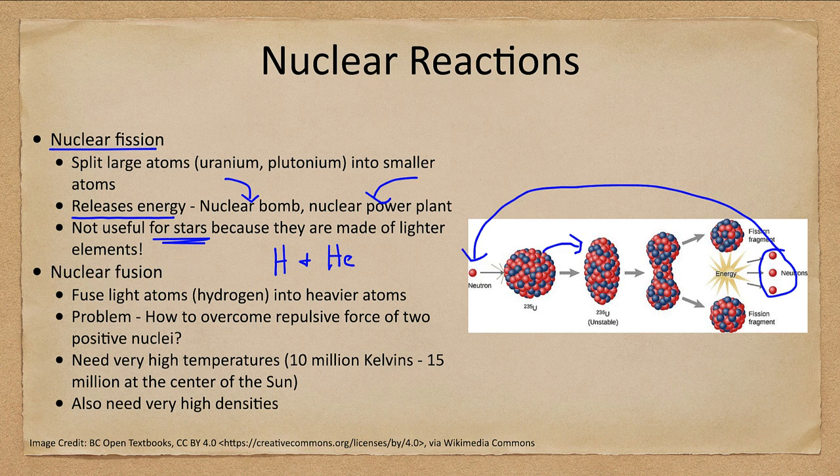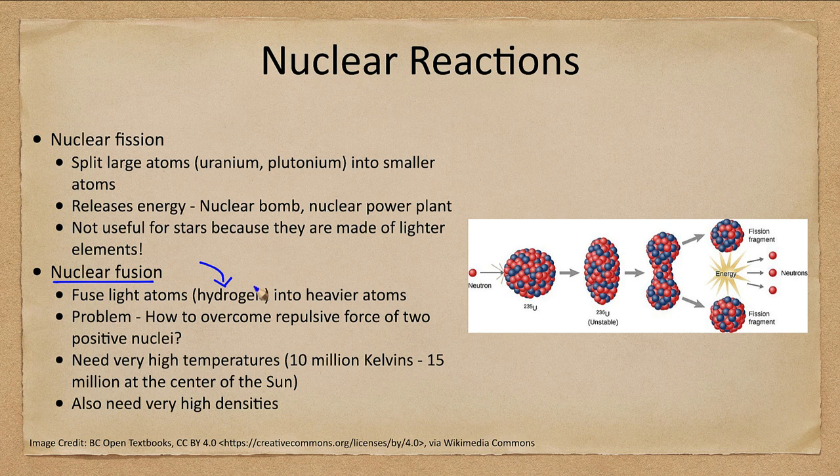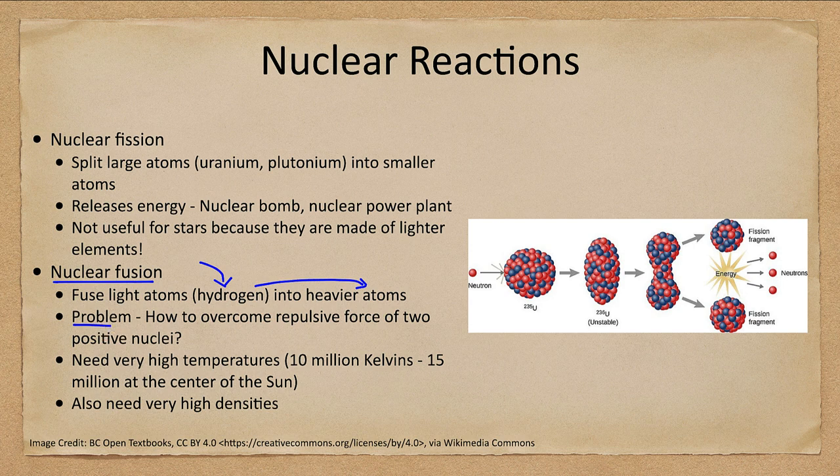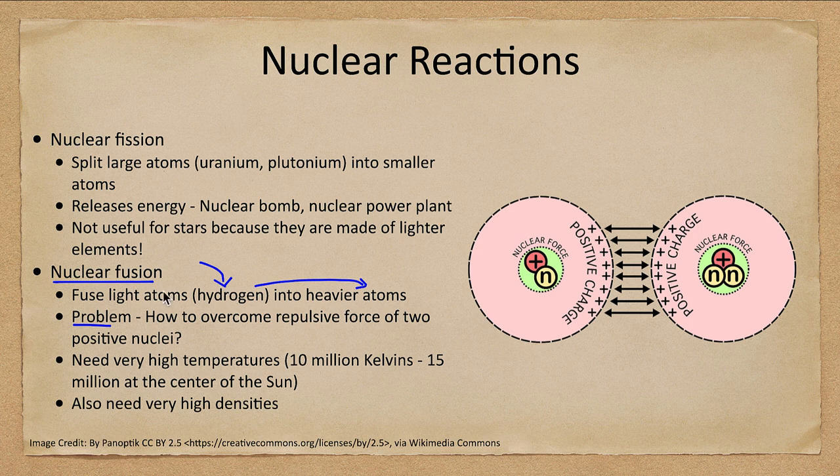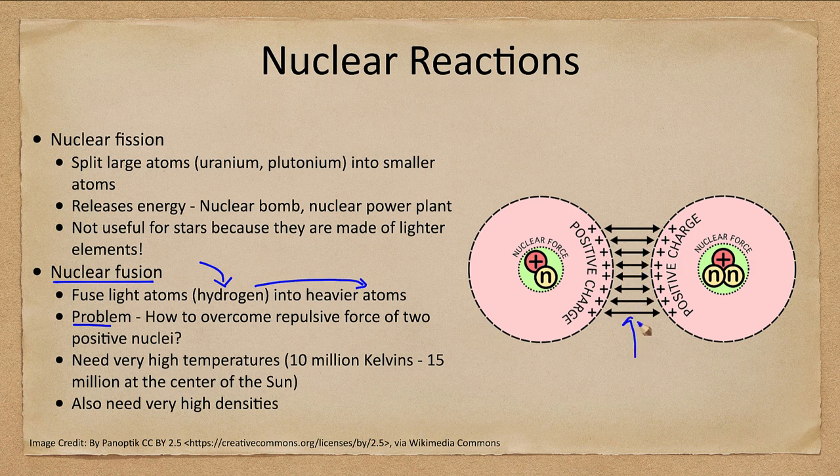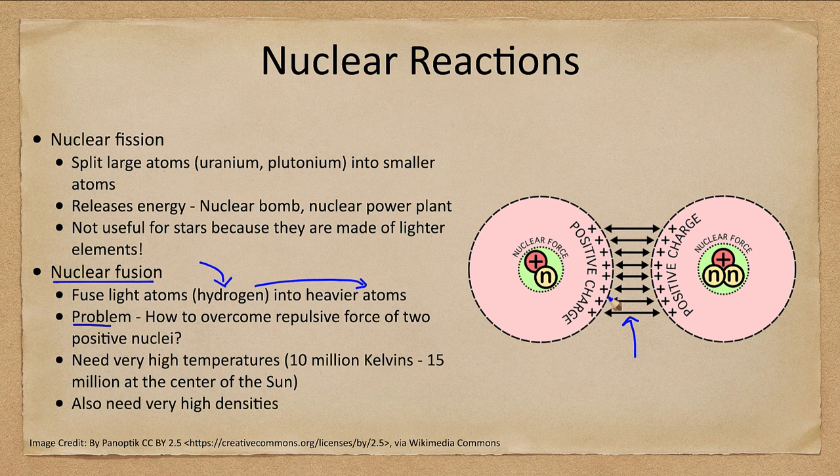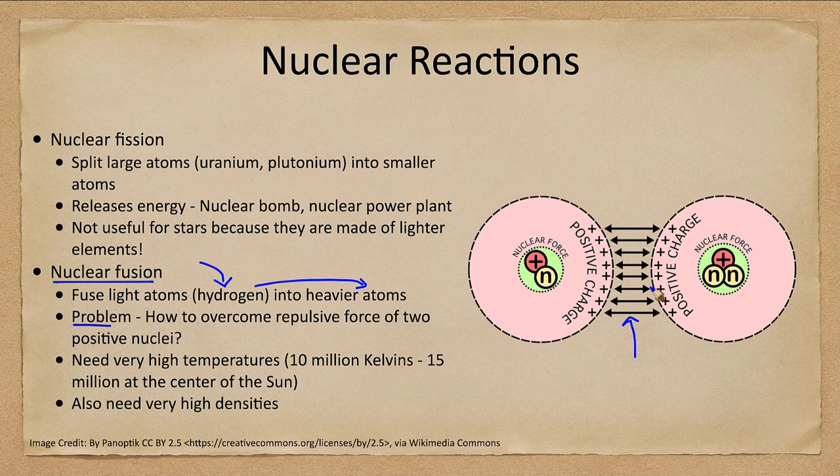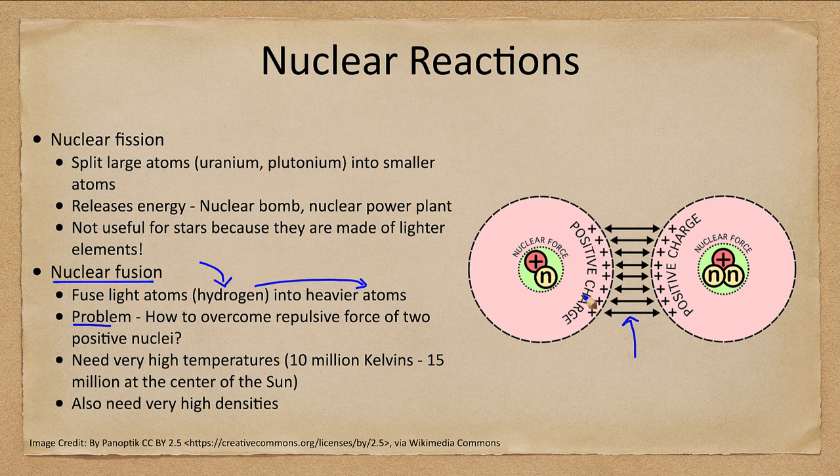The other thing we can do is nuclear fusion. Nuclear fusion fuses light atoms hydrogen into heavier atoms. The problem is how do you overcome the repulsive force? The nuclei are all positive, and they want to repel each other. As they come close to each other, you get a very strong repulsion. If you throw them toward each other at a slow velocity, they will push each other back and never fuse. What we need is to overcome this electrostatic repulsion. We can do that if we push them close enough together.